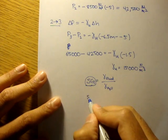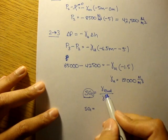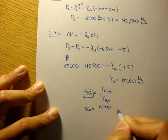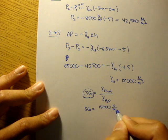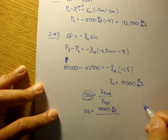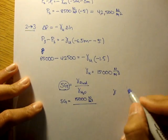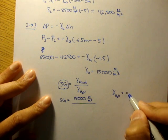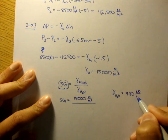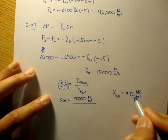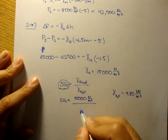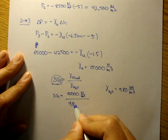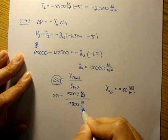The specific gravity is going to equal the fluid, in this case 15,000 newtons per meter cubed, over the specific weight of water. Specific weight is usually 9.8 kilonewtons per meter cubed. I'm just going to change that to 9,800 newtons per meter cubed so our units stay consistent.